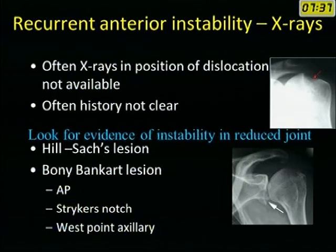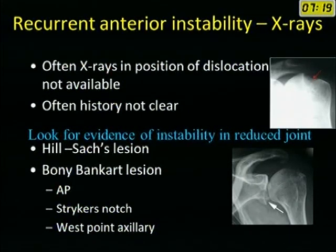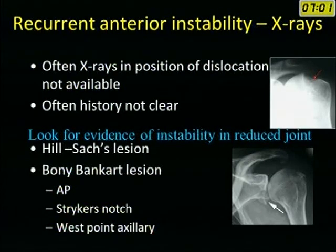During imaging, x-rays are often available only in the reduced position because the patient reduced the dislocation themselves or through a quack, so x-rays in the position of dislocation are usually not available. By history alone you cannot determine the direction of dislocation. You must look for evidence of instability in a reduced joint — specifically the Hill-Sachs lesion and the bony Bankart lesion. You perform three views: AP, Stryker notch view, and the West Point axillary view. The Stryker notch view is for the Hill-Sachs lesion and the West Point axillary view is for the bony Bankart lesion.